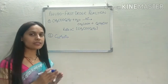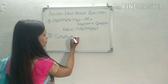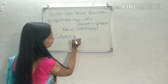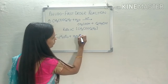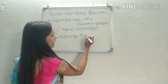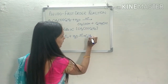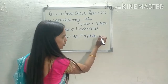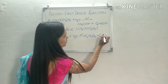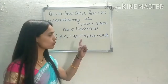Acid catalyzed inversion of cane sugar: sucrose is added to water in the presence of H⁺, and it forms C6H12O6 which is known as glucose, plus C6H12O6 which is known as fructose.